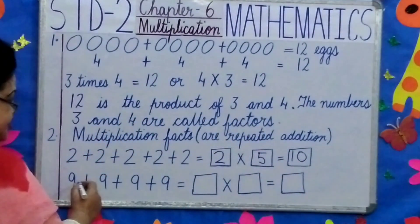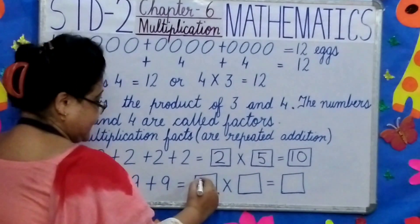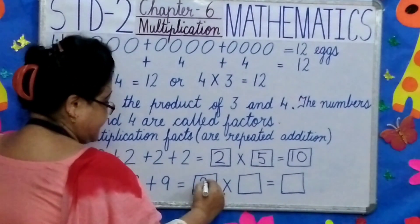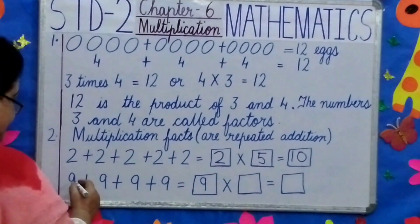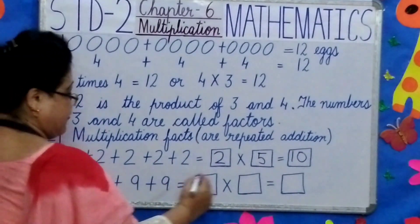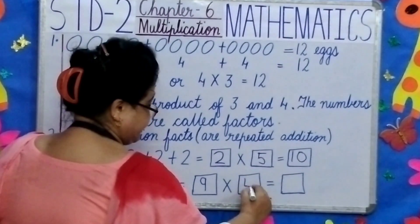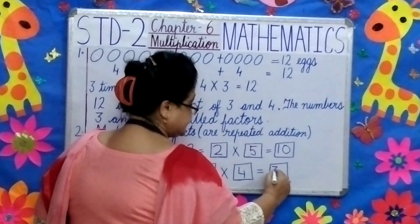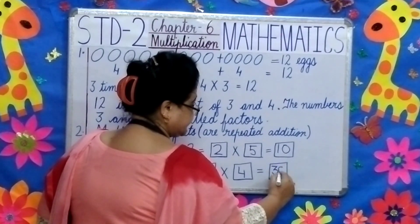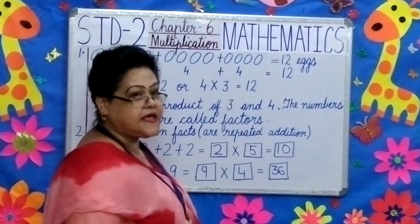What number is this children? 9. So in the first box we will write 9. Let's count how many times? 1, 2, 3, 4. In this box we will write 4. 9 fours are 36. So your answer is 36.